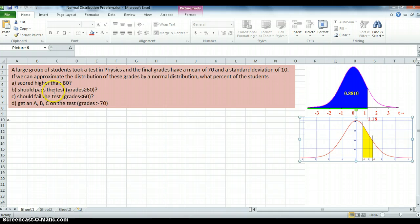So let's look at scored higher than 80. Well that would be the white part and we're looking for, we can only find the blue part using the cumulative distribution function. So let's look at our problem here.